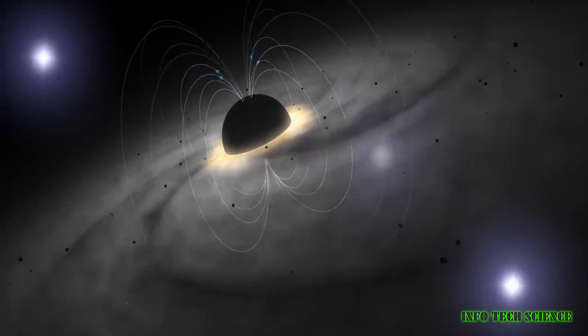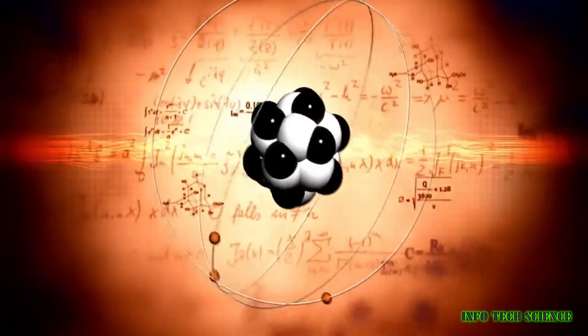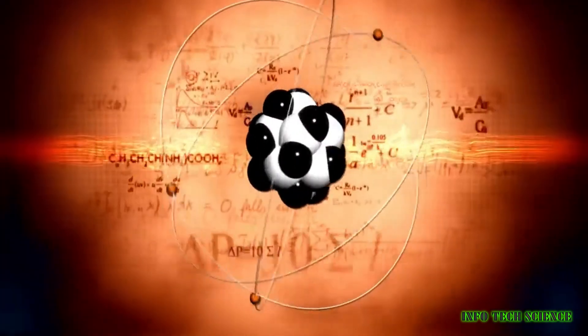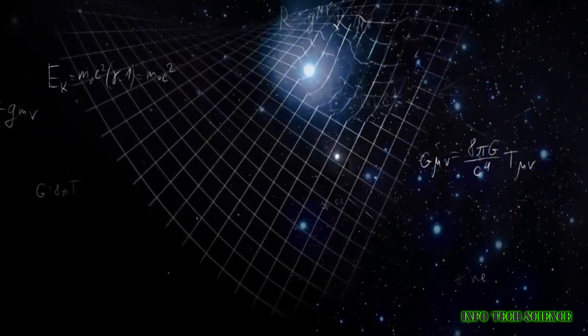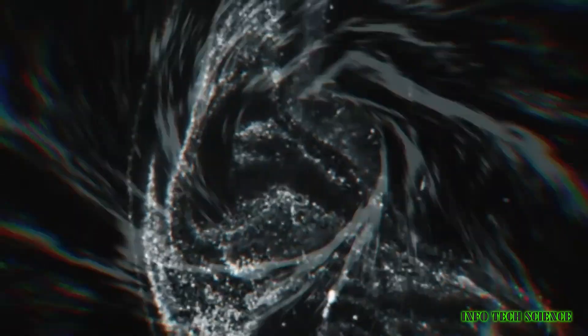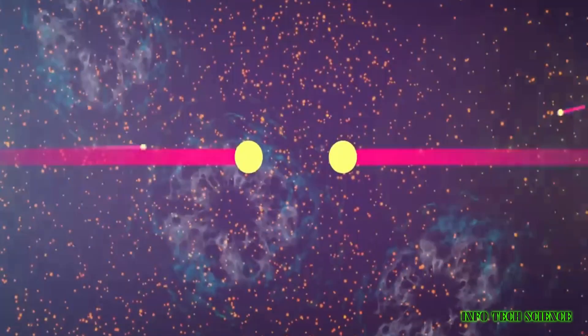Meanwhile, the positive energy particle escapes into infinity. As a result, the black hole loses energy to the vacuum fluctuation due to the negative energy particle, while the energy of the rest of the universe increases because of the positive energy particle. But how is it possible for a pair of particles to be created out of nowhere?